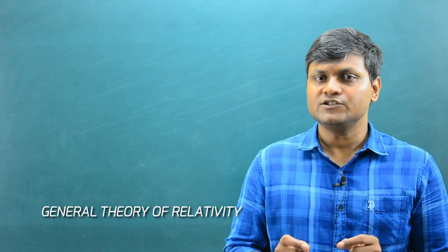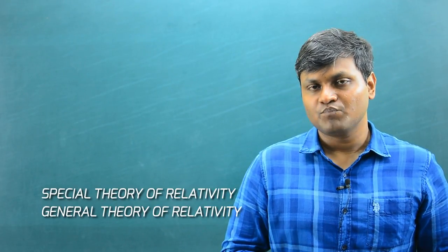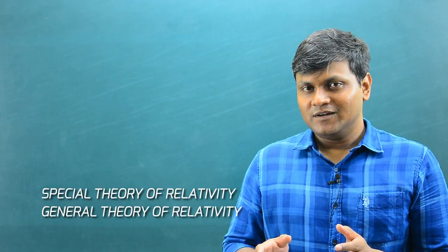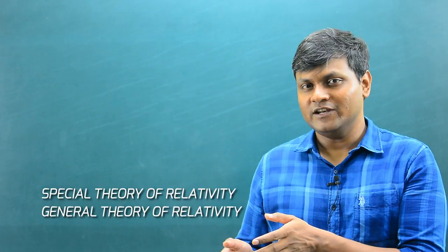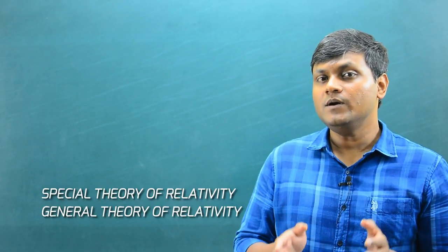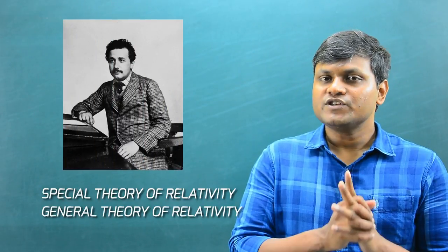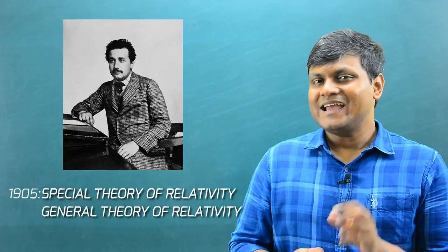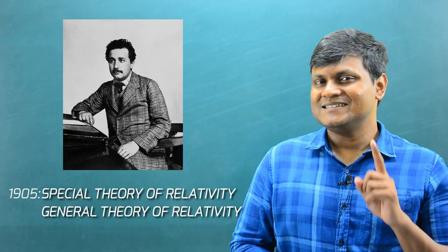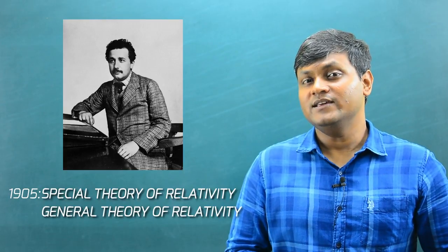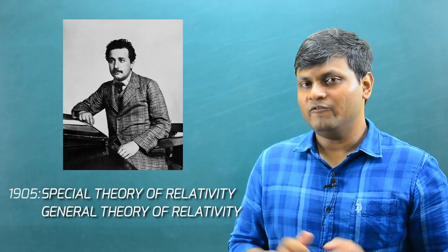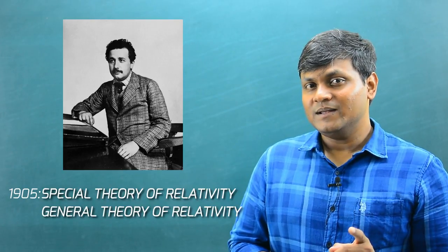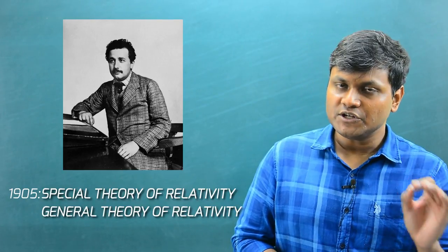I have been doing a mini series on special theory of relativity. As it turns out, both the special theory of relativity and the general theory of relativity were given by Albert Einstein almost a hundred years ago. In 1905, Albert Einstein, who was then a 26-year-old young man working in a patent office, published papers that led to the birth of special theory of relativity.